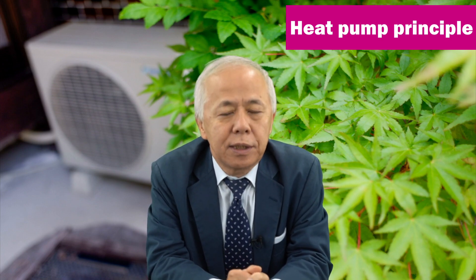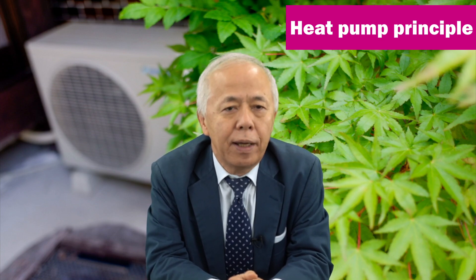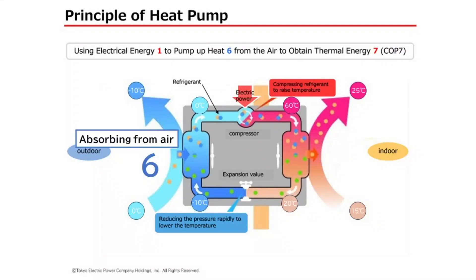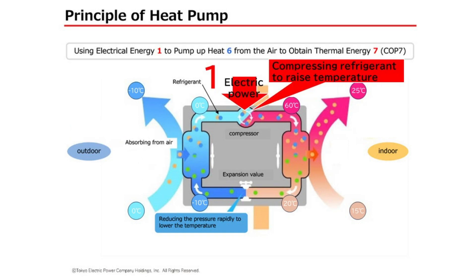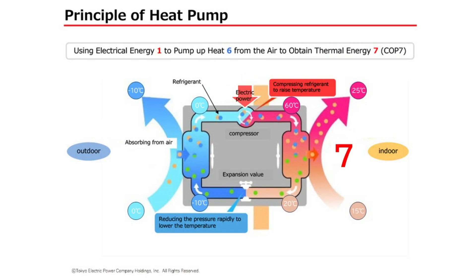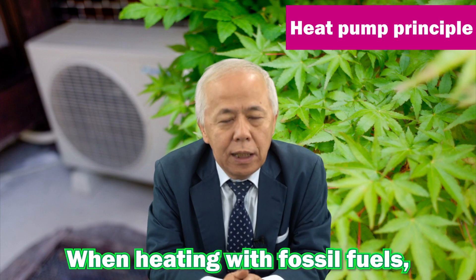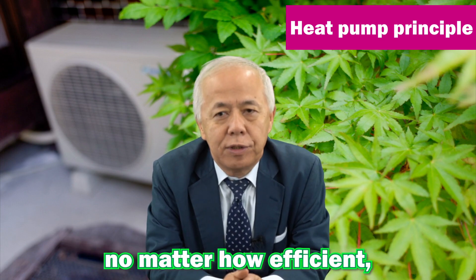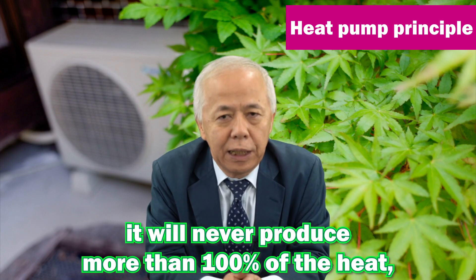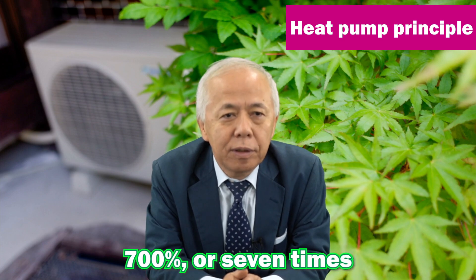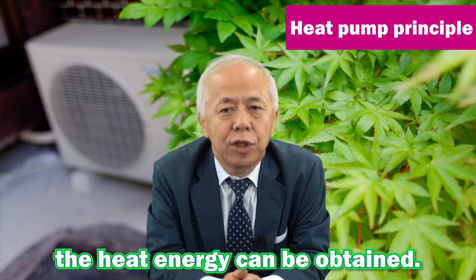The only part of this process that uses electric power is the part that operates the compressor. In this illustration, by pumping six units of heat from the atmosphere, one unit of electrical energy is used to deliver seven units of heat energy to the room. The performance of a heat pump is expressed in terms of COP, coefficient of performance, and the heat pump in this illustration has a COP of seven. When heating with fossil fuels, no matter how efficient, it will never produce more than 100% of the heat. But with the heat pump, 700% — or seven times the heat energy — can be obtained.